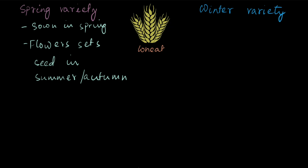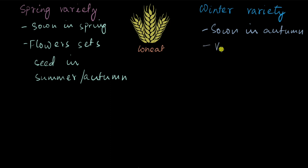Now the winter variety: it is sown in autumn. Then winter comes, and of course you know what will happen if it tries to flower in winter. So instead, it undergoes vernalization, and then it flowers in the spring.